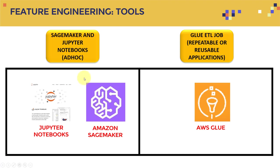What tools should you use for feature engineering? You can go two routes. First, you can use Jupyter Notebooks with Amazon SageMaker for ad hoc analysis — write your own code, as shown in the previous section where we covered Jupyter Notebooks and scikit-learn. On the other hand, you can use AWS Glue to perform ETL jobs and transformations, which gives you a repeatable and reusable pipeline. SageMaker/Jupyter is good for ad hoc work, while Glue is better for recurring workflows.